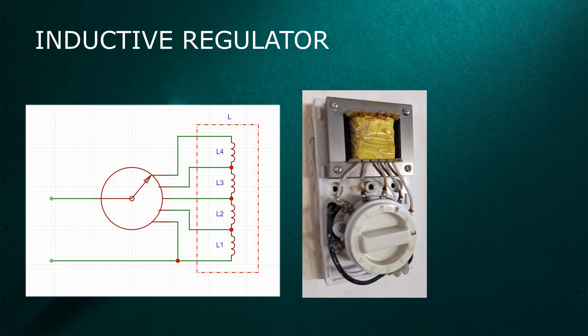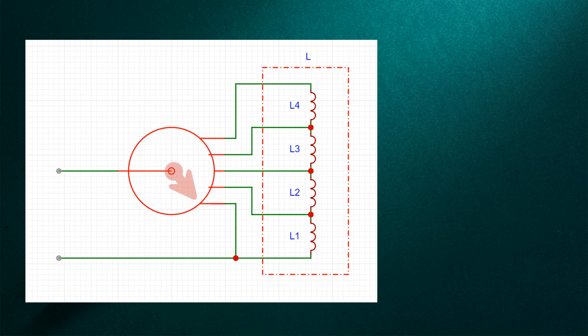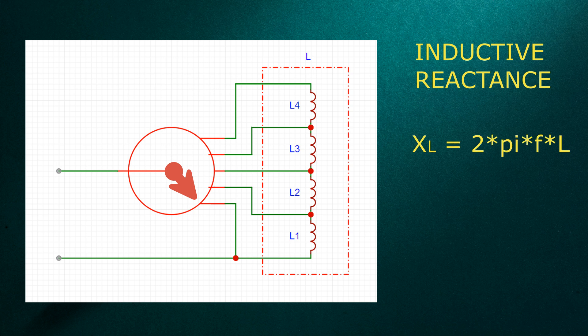Now let's discuss the inductive regulators. The inductive type fan regulator has tappings on its coil winding. While it looks like a transformer, it is actually an inductor because it has one-sided winding only. The inductor acts as a resistor for an AC circuit and the value of the inductive reactance XL is equal to 2πfL, where f is the line frequency and L is the inductance.